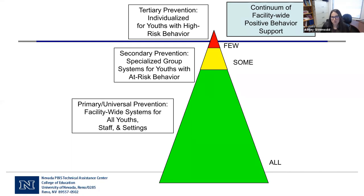Tier one is about prevention — of problem behavior and risk behavior, but also prevention of the need for more intensive interventions. A common misconception in juvenile justice, mental health, and alternative education settings is that all students need tier two and three support. But what everyone at a facility needs becomes tier one practices. It's critical to build tier one even with an intensive population.